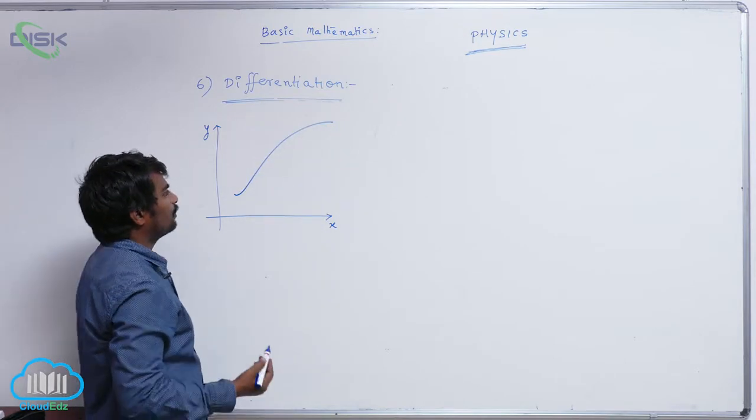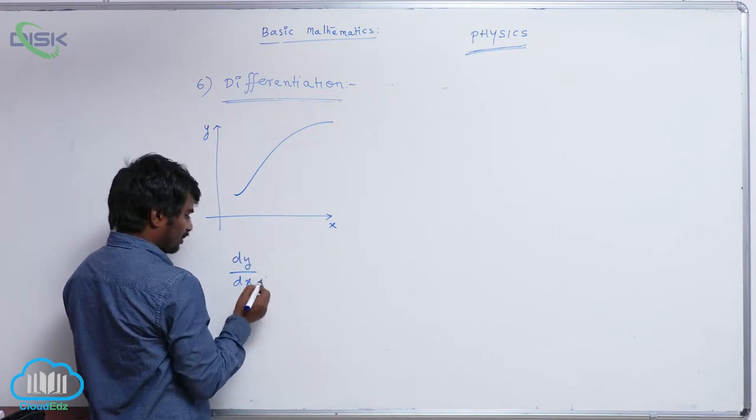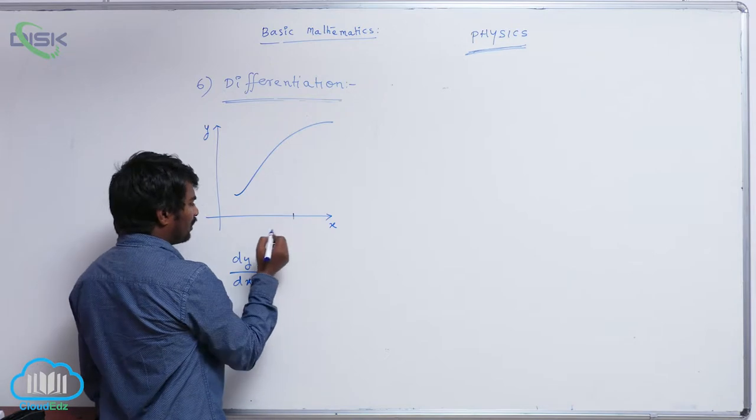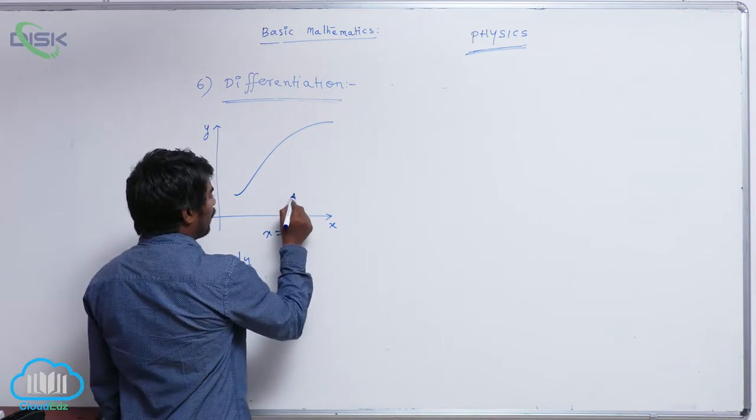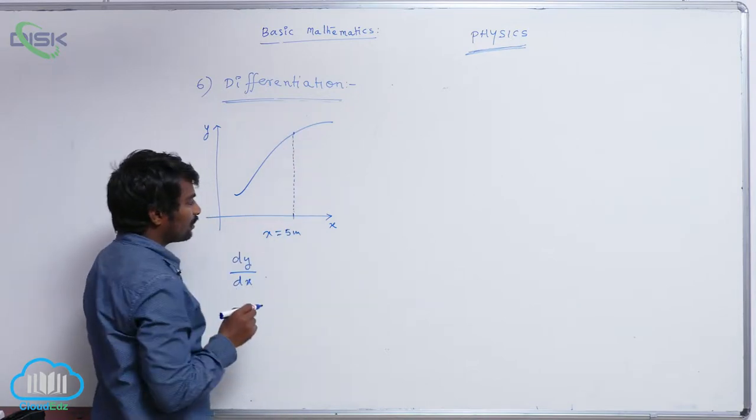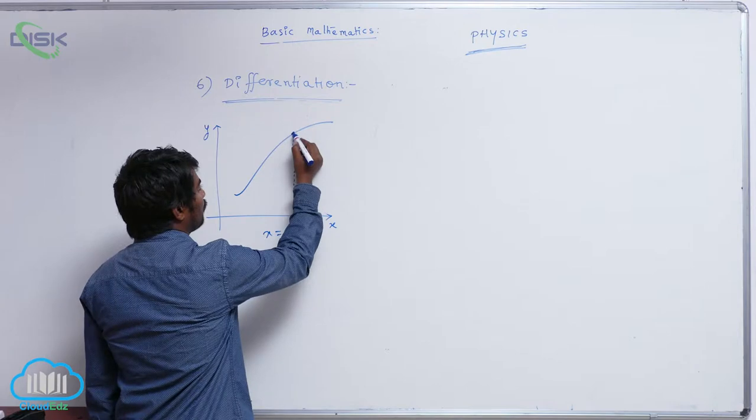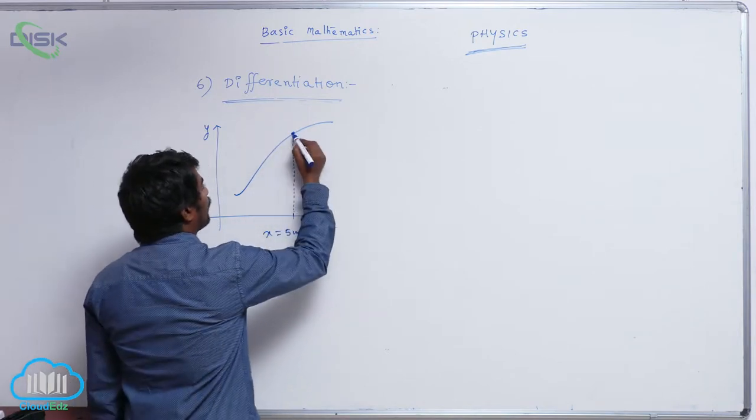So what I told you, if you want to calculate dy by dx, let us say at x is equal to some 5 meters. So what is the value? What is the point that corresponds to x is equal to 5? So this is the point. At that point, what you have to do?